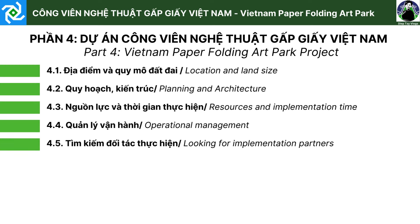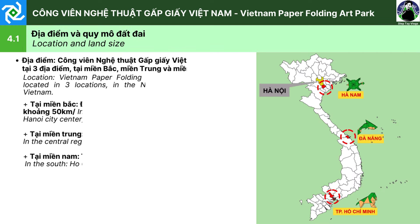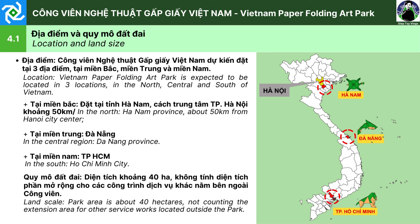Phần 4. Dự án công viên nghệ thuật gấp giấy Việt Nam, gồm có 5 nội dung chính. 4.1. Địa điểm và quy mô đất đai. Công viên nghệ thuật gấp giấy Việt Nam dự kiến đặt tại 3 địa điểm: miền Bắc, miền Trung và miền Nam. Tại miền Bắc, đặt tại tỉnh Hà Nam, cách trung tâm Hà Nội khoảng 50km. Tại miền Trung, thành phố Đà Nẵng. Tại miền Nam, thành phố Hồ Chí Minh. Quy mô đất đai: diện tích khoảng 40 ha, không tính diện tích bên ngoài.